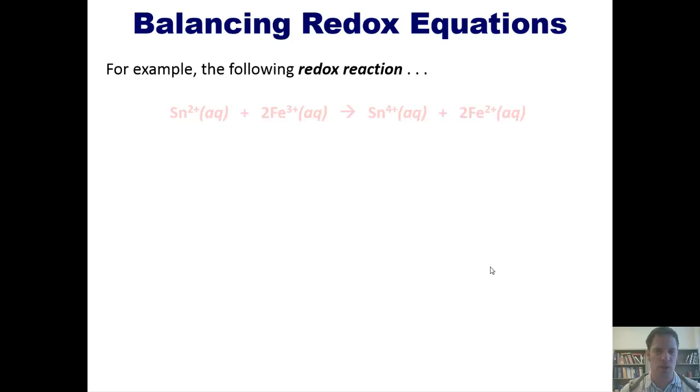Take, for example, this redox reaction. If we look at this closely, you'll notice that tin is going from having a 2-plus charge to a 4-plus charge. That is, it's becoming more positive, which means it's losing electrons, so tin is getting oxidized. Iron, in contrast, is going from 3-plus to 2-plus, which means that it is gaining electrons. It's becoming more negative, which means that it is being reduced.